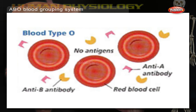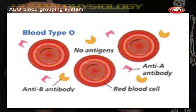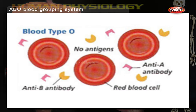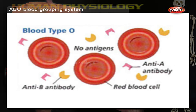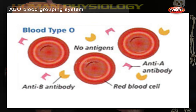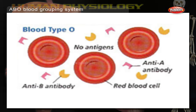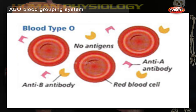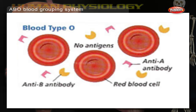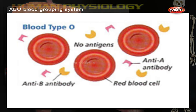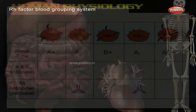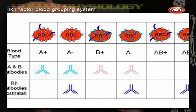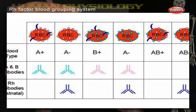If you belong to blood group O, you have neither A nor B antigens on the surface of your red blood cells, but you have both A and B antibodies in your blood plasma.